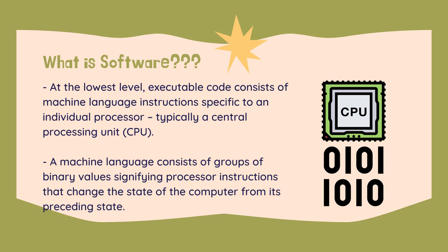A machine language consists of groups of binary values signifying processor instructions that change the state of the computer from its preceding state. For example, an instruction may change the value stored in a particular storage location inside the computer, an effect that is not directly observable to the user. An instruction may also indirectly cause something to appear on a display of the computer system, a state change which should be visible to the user.